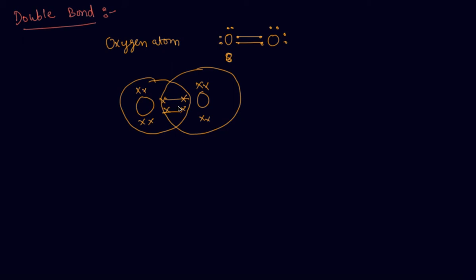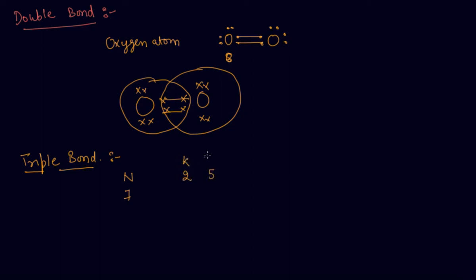Now let's discuss the triple bond. Let's take the example of the nitrogen atom. Nitrogen has atomic number seven, so it has five electrons in the outermost shell.